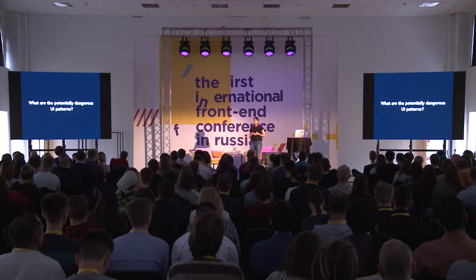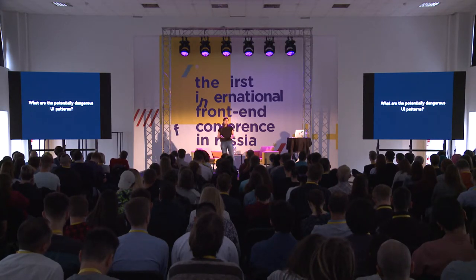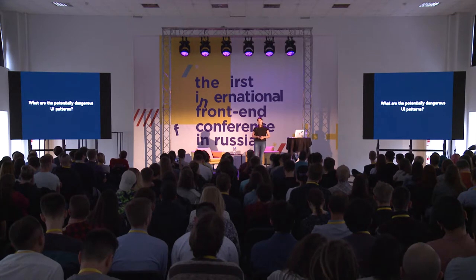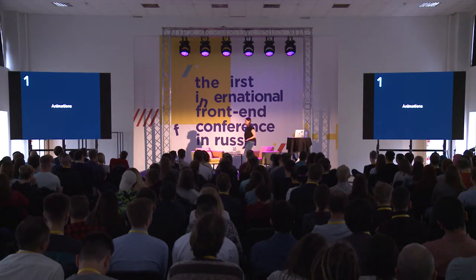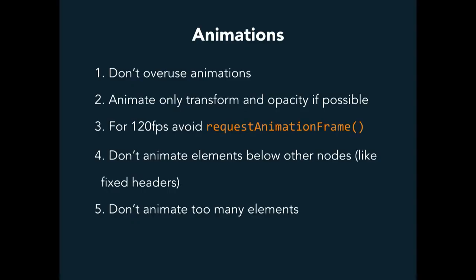Now, there are some potentially dangerous UI patterns that we all use because it's just what people do. But if we don't think about them enough, they can be harmful to performance. First: animations. If an animation is not optimized, it will be visible with the bare eye — you'll see the jank. So don't overuse animations; don't add them if you don't have to. And try to animate only transform and opacity, since these are the most optimal changes.